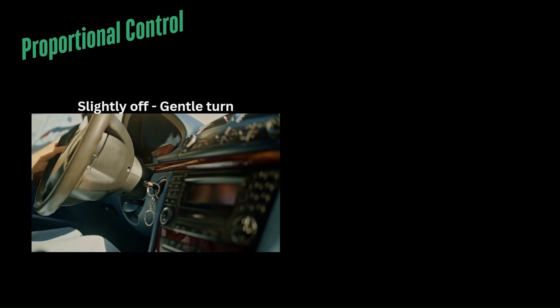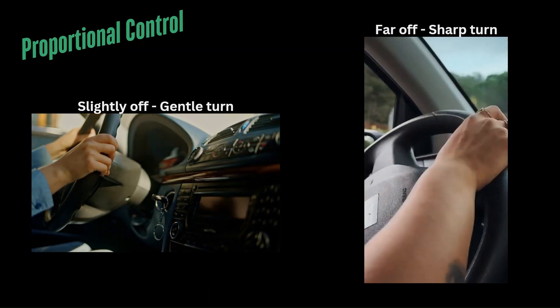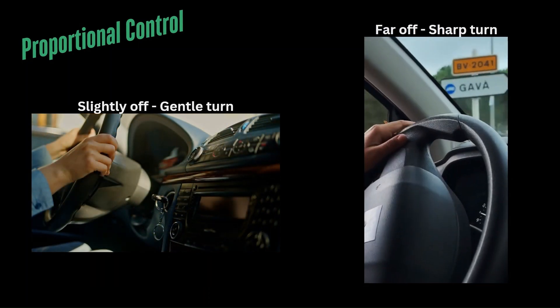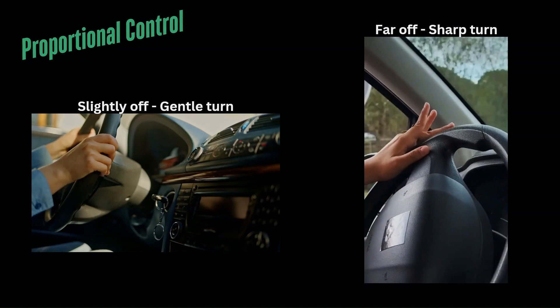For an analogy, think of driving a car. If you drift slightly off the road, you gently turn the wheel. But if you are way off, you turn the wheel more sharply to correct your path. That's exactly how proportional control works — it adjusts the correction based on how far off you are.